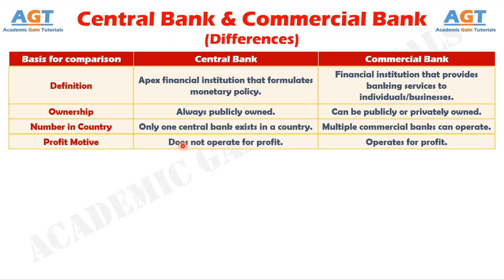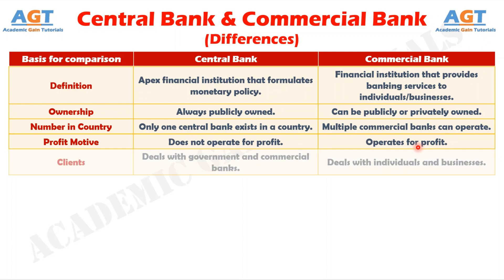Number four: the central bank does not function to earn profit, whereas commercial banks are profit-oriented institutions. Number five: a central bank deals with the government and commercial banks, whereas a commercial bank deals with individuals and businesses.